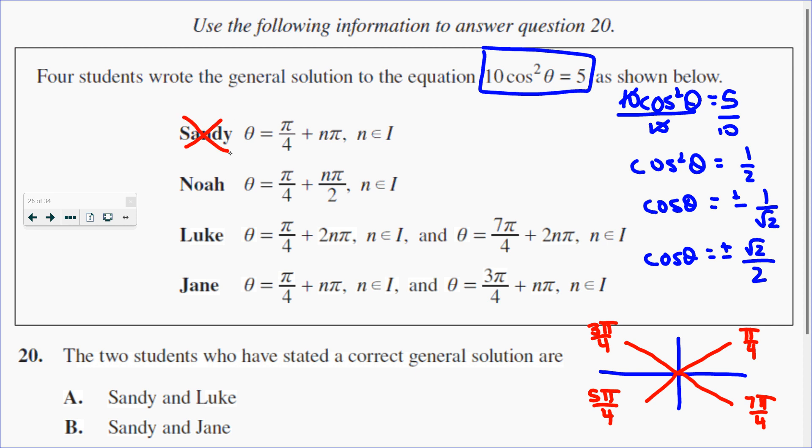Let's look at Noah. Noah is saying pi over 4 plus multiples of pi over 2. So pi over 4 plus a pi over 2 would take us to 3 pi over 4, plus a pi over 2 would take us here and then here. So this one would be correct.